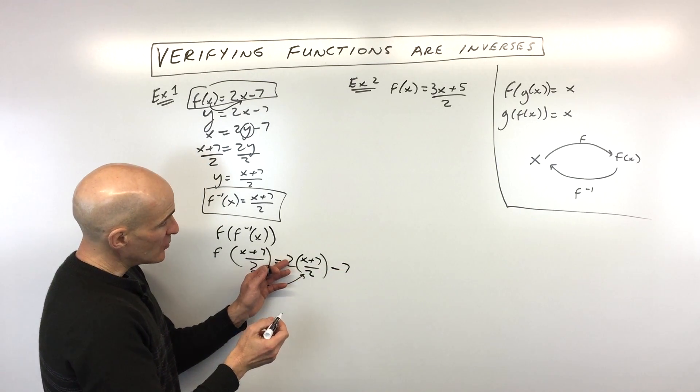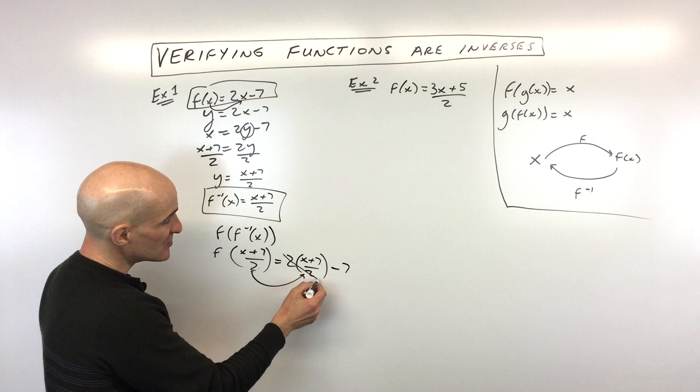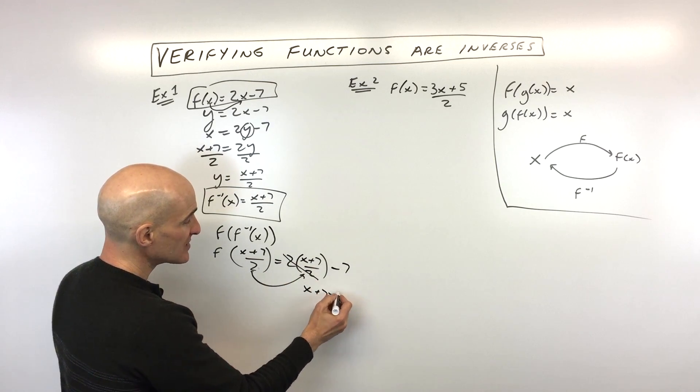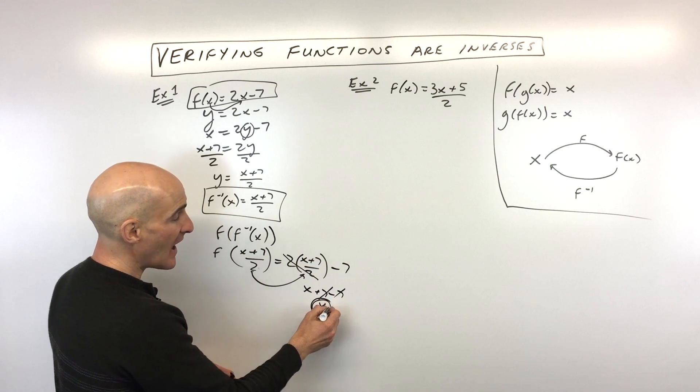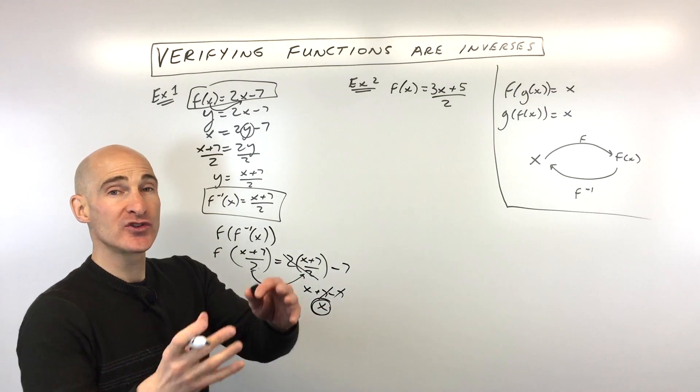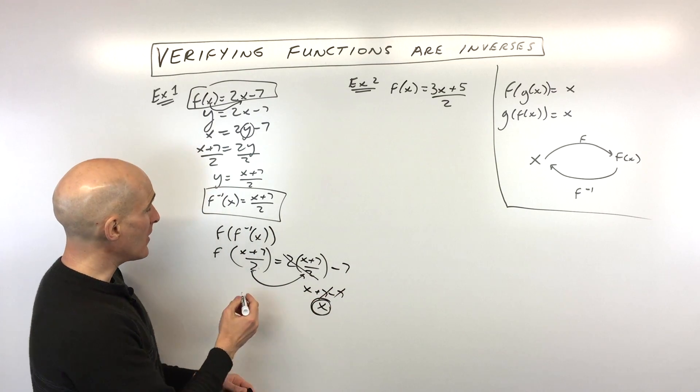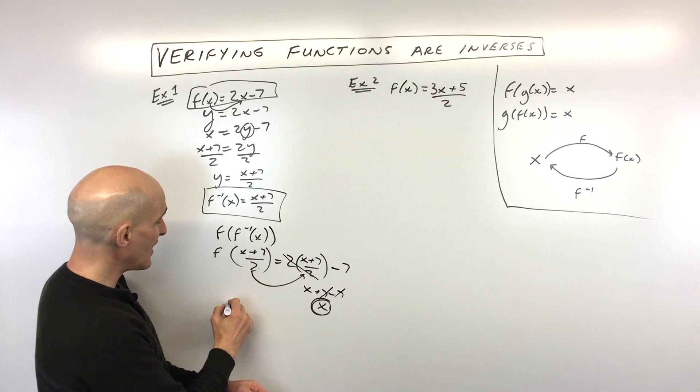Now notice that when you multiply by two, you divide by two, these are inverses, they cancel. So we're down to X plus seven minus seven, seven and negative seven, those cancel, we just get X. So you don't want to just stop there though. We want to also compose it the other way as well. So here we did F, F inverse of X.